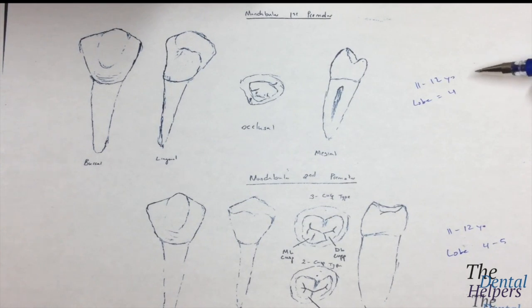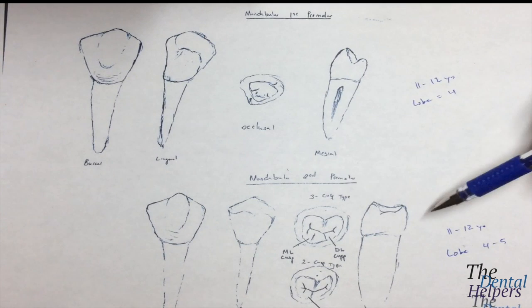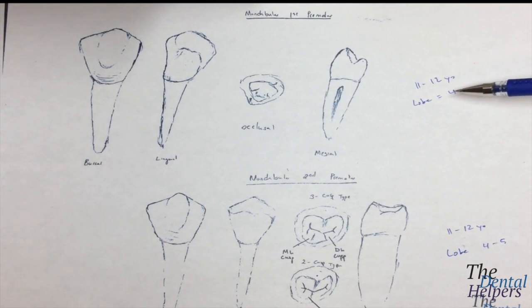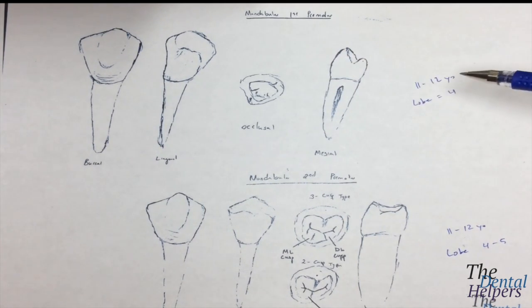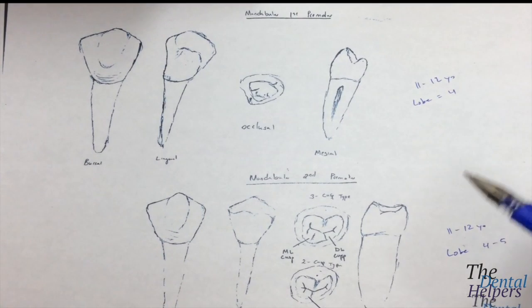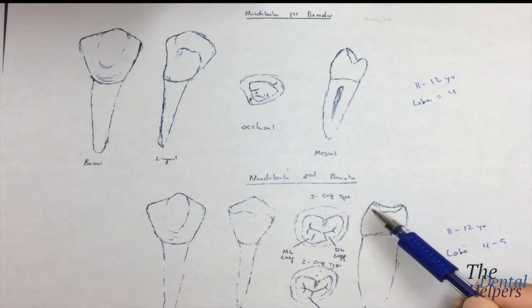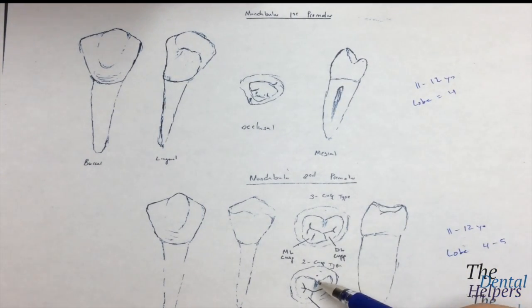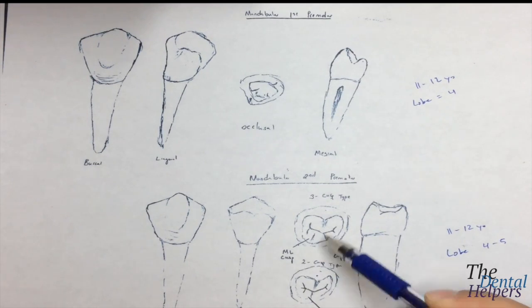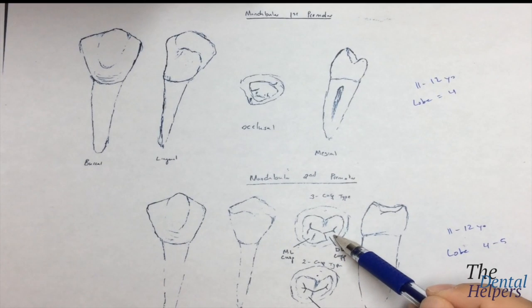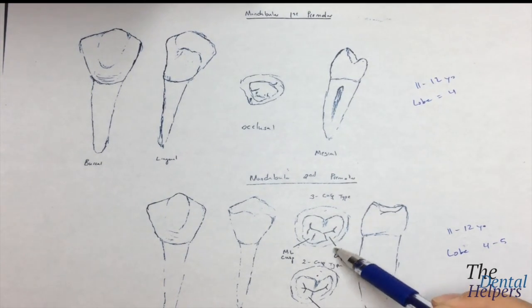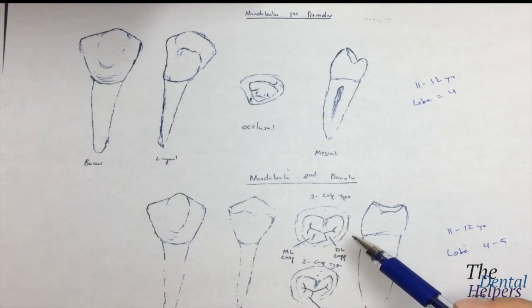The mandibular first and second premolars both erupt around 11 to 12 years old. The first premolar, if it has two cusps, has four lobes of development. The difference is that the mandibular second premolar can have a two-cusp form or a three-cusp form. Since we have this extra cusp, it's going to require five lobes of development to make the three-cusp form.